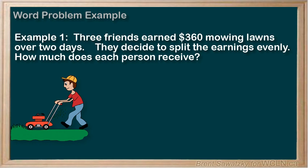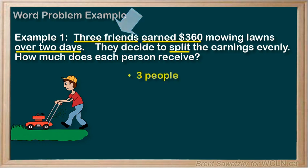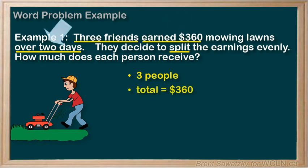On to step 2: organize. Let's get into some details. Three friends — underlined — they earned $360 over two days and they split it evenly. So now let's make a few notes: we have three people involved, the total is $360 over two days — that detail doesn't really matter so we'll skip that — and they split it.